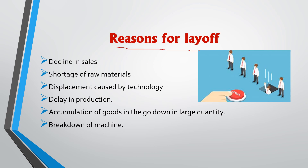What are the reasons for layoff? Why are employees given separation? The first is a decline in sales — suppose the company's sales are declining and they offer layoff to employees. Then shortage of raw material. If there is a shortage of raw material. Then displacement caused by technology — suppose advanced technology is implemented and because of that you need limited employees, so layoff is given.